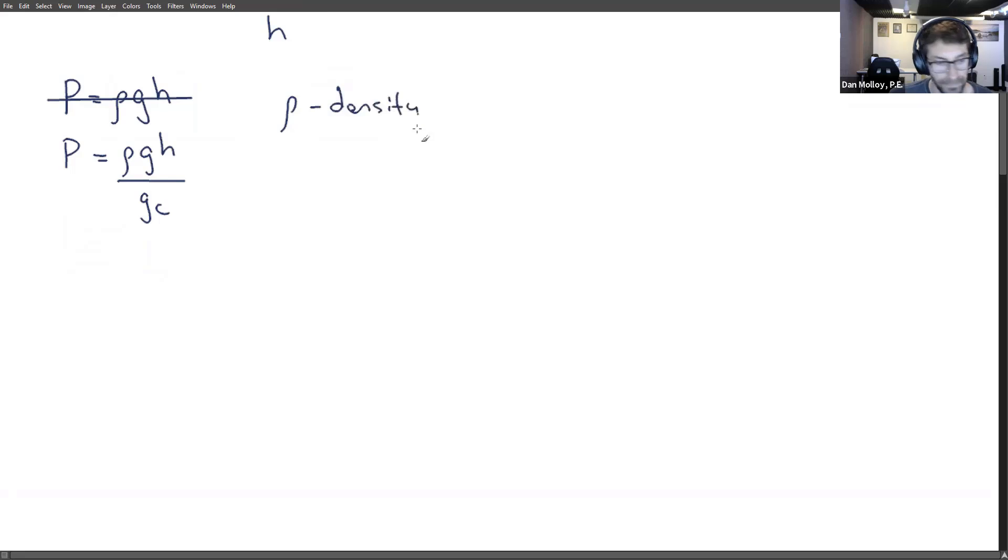Rho is density. And we're going to introduce this idea of gamma, gamma H, where gamma is specific weight. So it has the same magnitude as the density, but it has units of pound force per cubic foot. Most engineers will stop here.